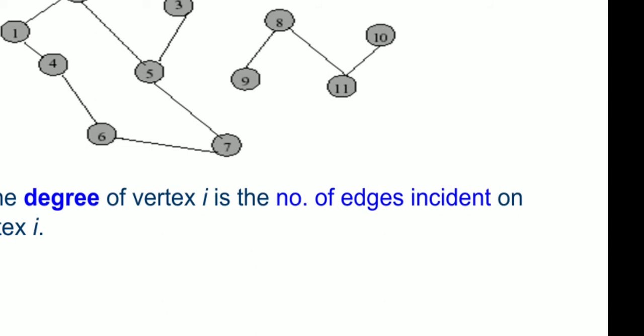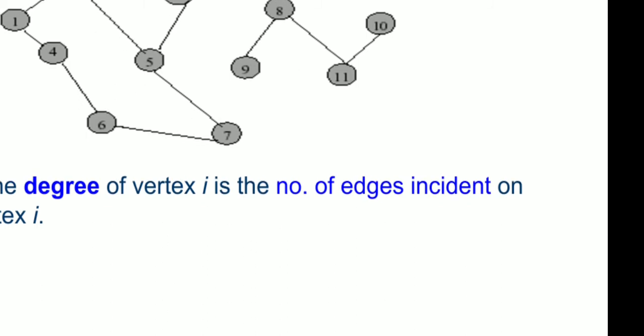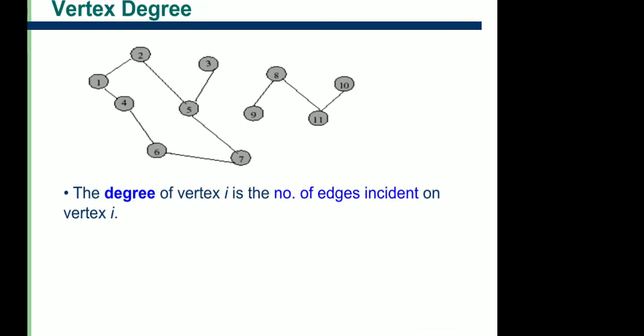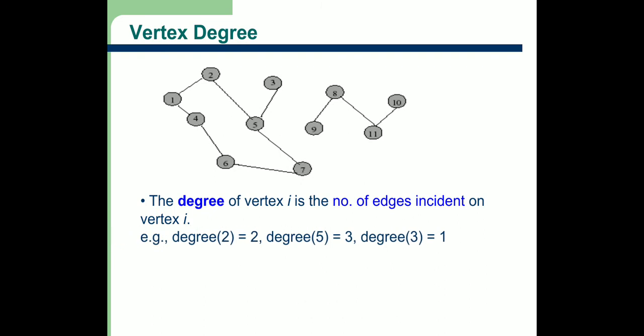Similarly, node 10 participates in only one edge, that is (11,10). Therefore the degree of 10 is 1. Node 2 participates in 2 edges, so degree of 2 is 2. Node 5 participates in 3 edges, so degree of 5 is 3. Node 3 has 1 edge with 5, therefore the degree of 3 is 1. In summary, degree is how many edges any particular vertex participates in.